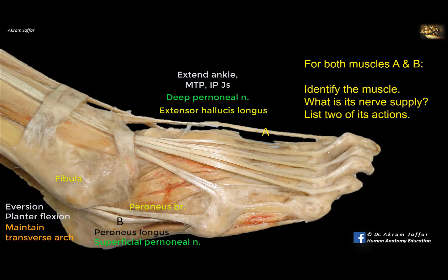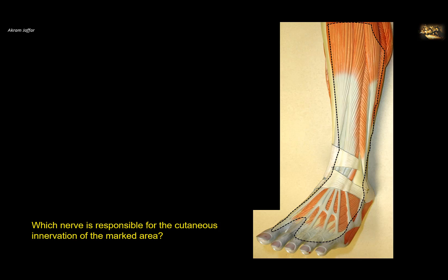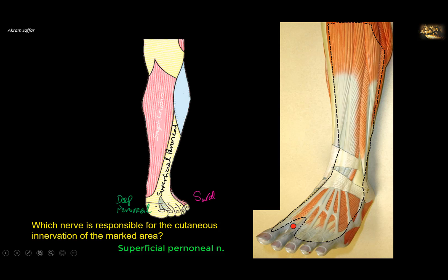The superficial peroneal nerve, although named superficial, is not purely sensory — it supplies peroneus longus and brevis, then becomes cutaneous to supply the lateral side of the front of the leg and most of the dorsum of the foot. Which nerve is responsible for the cutaneous innervation of the marked area? This is the area supplied by the superficial peroneal nerve — on the lateral side and front of the leg, and most of the dorsum of the foot. Except in the first web space between the big toe and second toe, where the deep peroneal nerve, which is mainly muscular, becomes cutaneous to supply the skin of the first web. The lateral side of the foot is supplied by the sural nerve, and the medial side of the foot is supplied by the saphenous nerve, down to the metatarsophalangeal joint of the big toe.